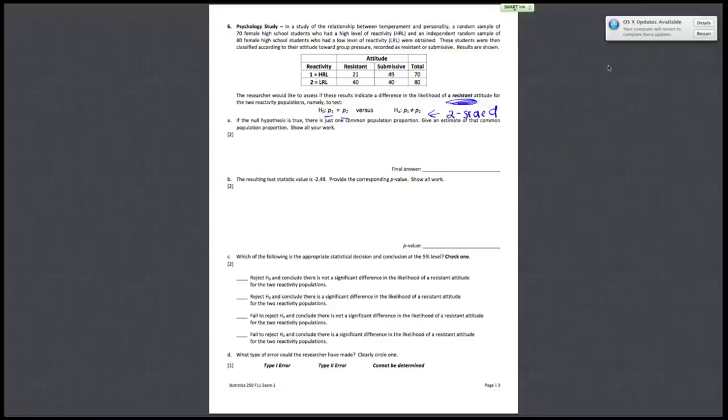Alright, so question A. If the null hypothesis is true, there is just one common population proportion. Give an estimate of that common population proportion.